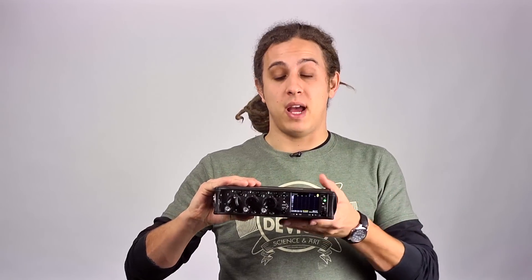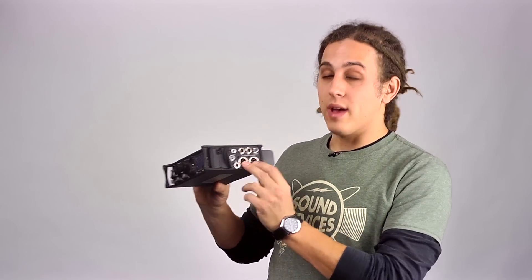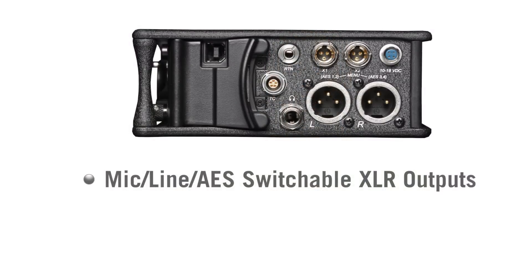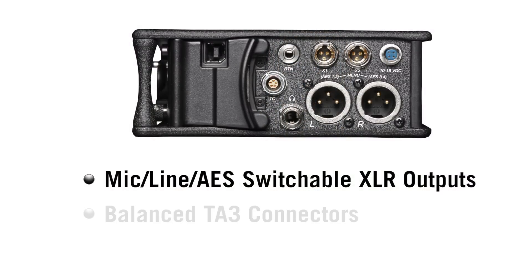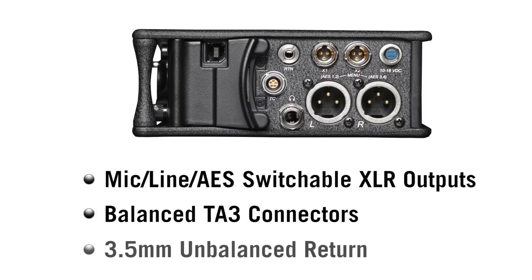On the output panel of the 633, we have two balanced mic/line and AES switchable XLR outputs, two TA3 outputs for Aux 1 and Aux 2, and a return input.